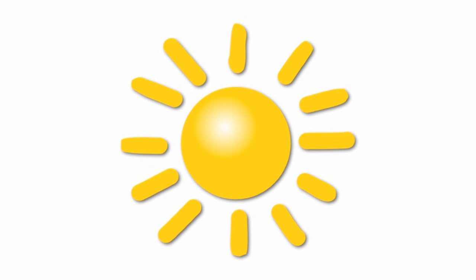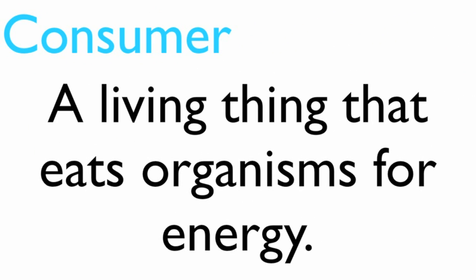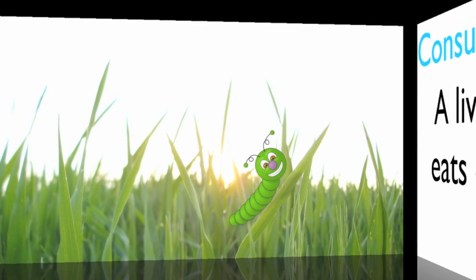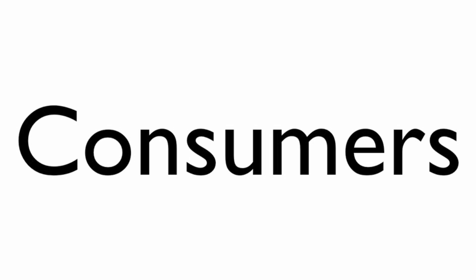Consumers. The sun is the main source of energy for planet Earth. Plants capture the sun's energy through the process of photosynthesis. The energy is used by plants or stored until organisms like caterpillars come along and consume the plant. Consumers are living things that eat organisms for energy. The caterpillar is a consumer that eats the plant for energy. Consumers can be broken into groups based on what they eat.